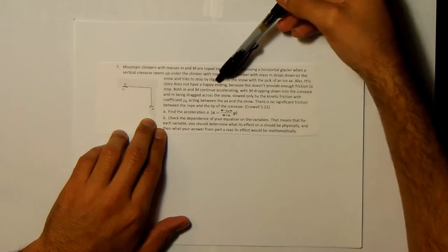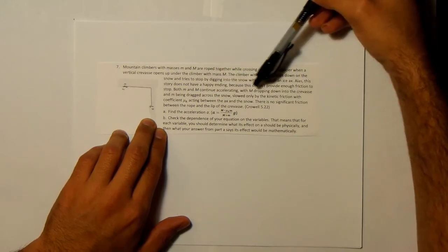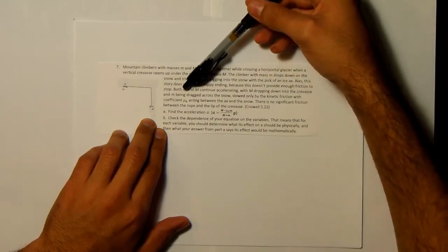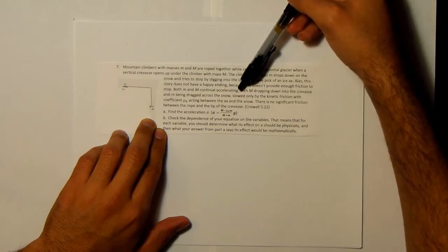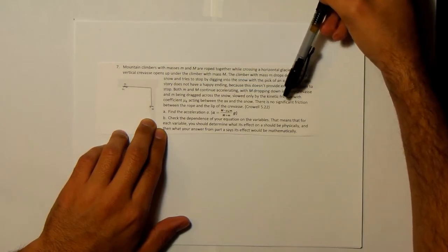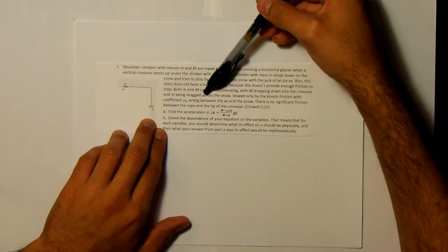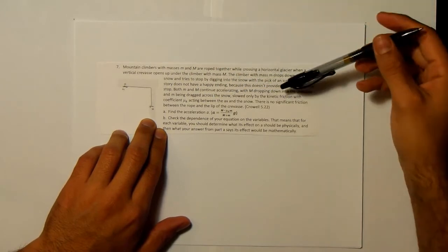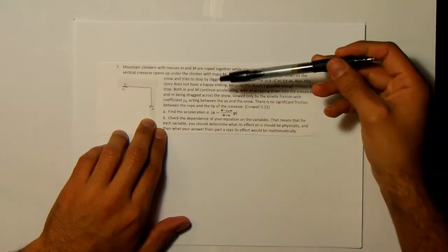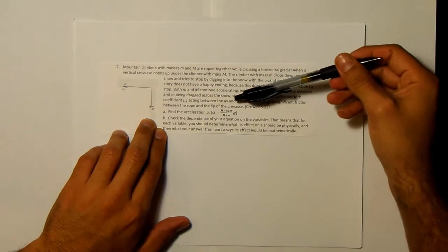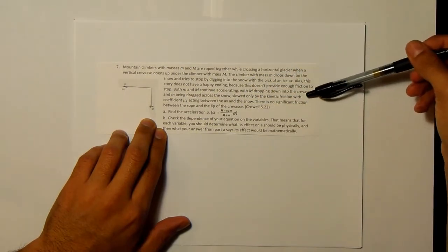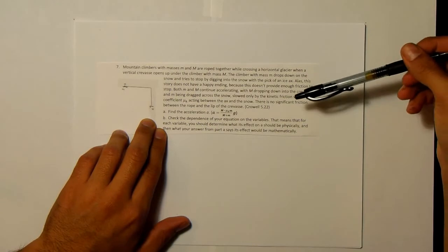Alas, this story does not have a happy ending because this does not provide enough friction to stop. Both little m and big M continue accelerating with big M dropping down into the crevasse and little m being dragged across the snow, slowed only by the kinetic friction with coefficient mu sub k acting between the axe and the snow. There is no significant friction between the rope and the lip of the crevasse.